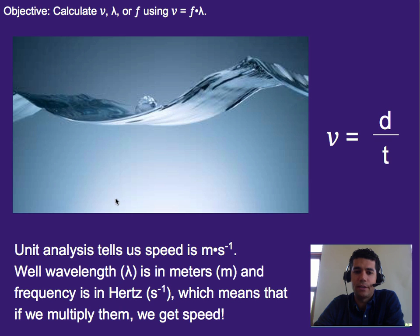Well, unit analysis will tell us that since speed is meters per second and wavelength is just in meters, and hertz is an inverse second or per second, that means if we multiply those two things, we get wave speed. So that's another way we can use to calculate it.